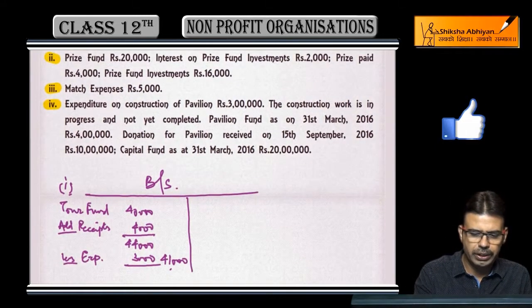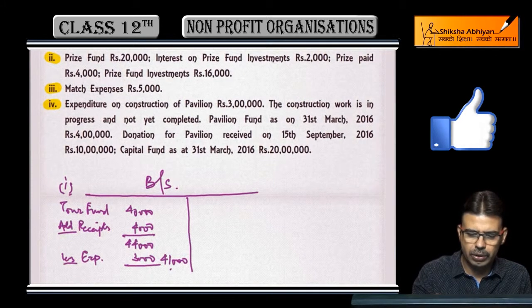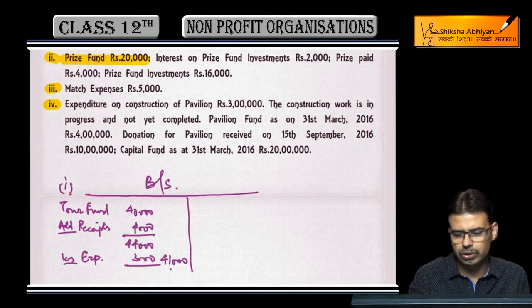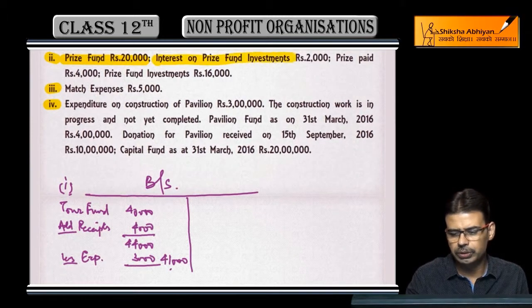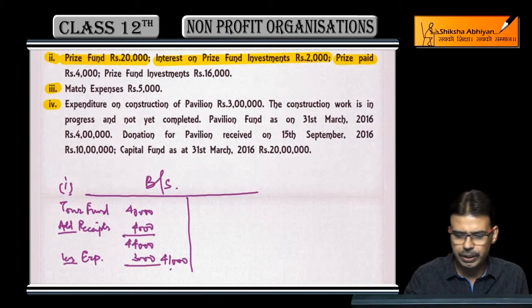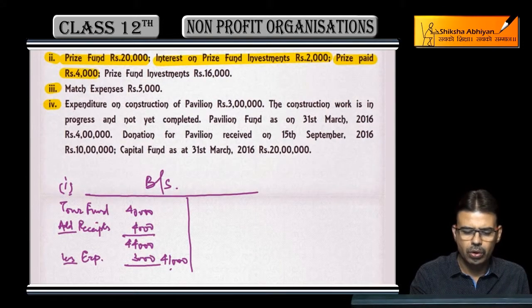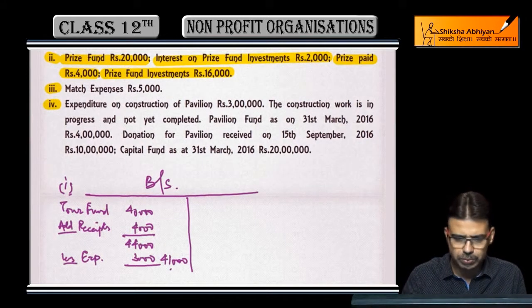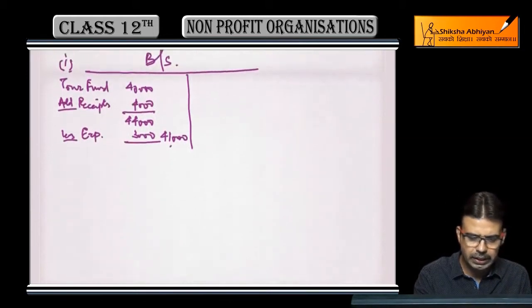Point number two: issi tarah se hummare ko diya hua hai — price fund 20,000, interest on price fund investments 2,000, prices paid (yeh expense hai), aur us se related investment 60,000. Investment to simple asset hai, iska koi khas problem nahi hai.